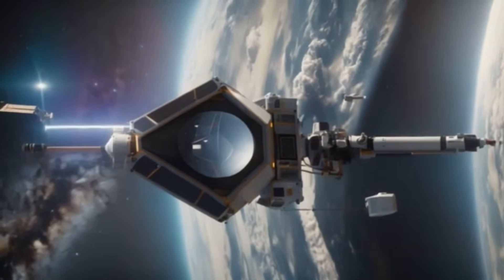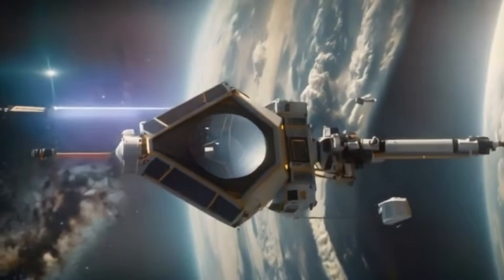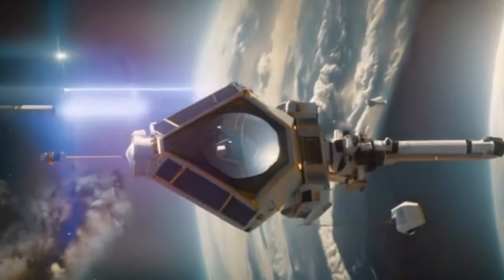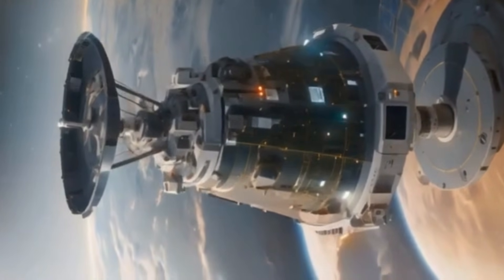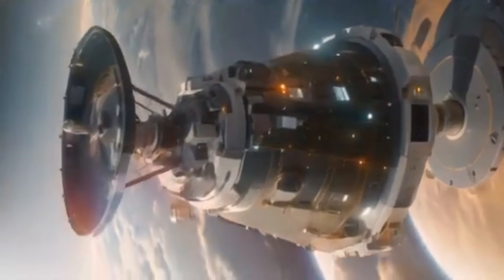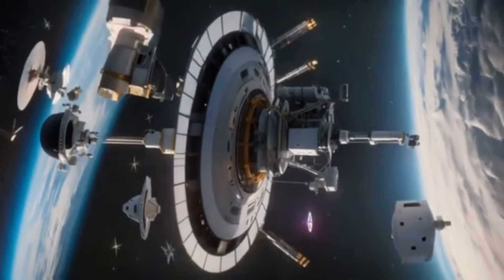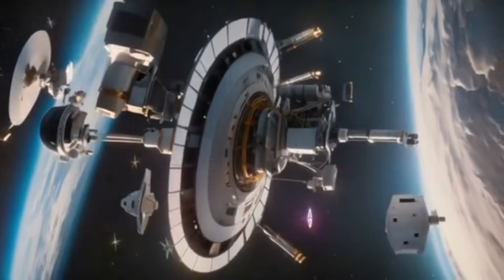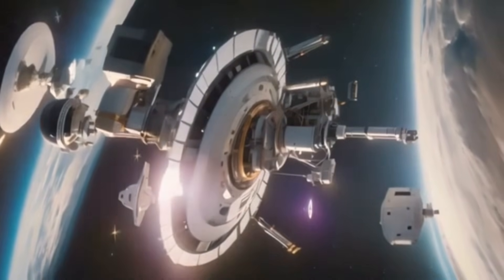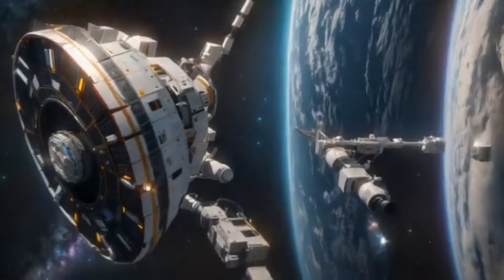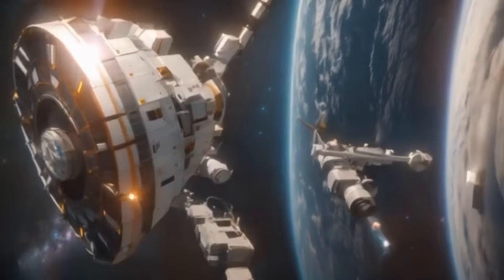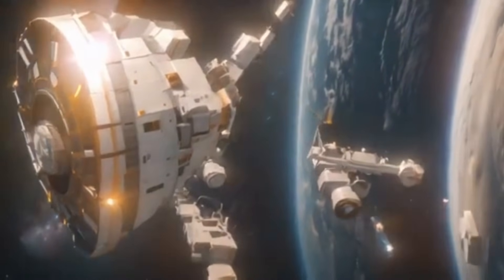And it raises new questions. If these structures, filaments, hexagons, spokes, exist here, at the boundary of our star system, do they exist around other stars as well? Is this a universal phenomenon, a kind of cosmic punctuation mark where solar winds meet interstellar currents? Or is it unique, a signature of our sun's peculiar personality? And what if this image is just the first page of a new chapter?